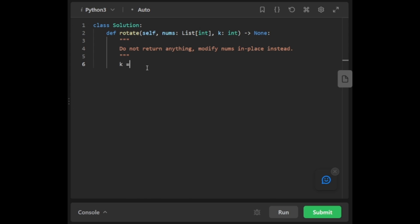We will first find our actual number of steps that needs to be taken, so we will use our modulo operator. Then we will reverse our array, so that would be nums of minus one, then we will reverse the array.